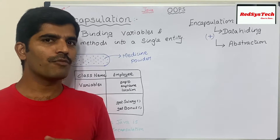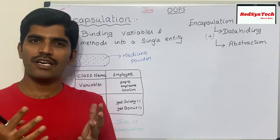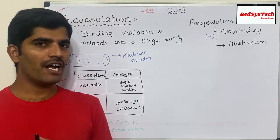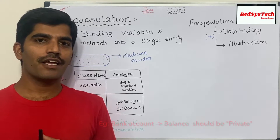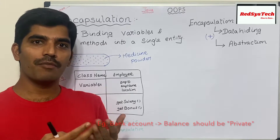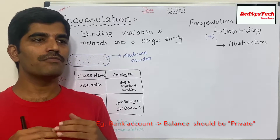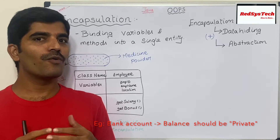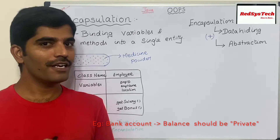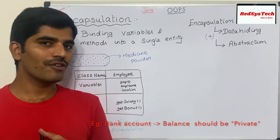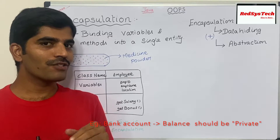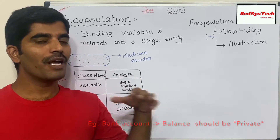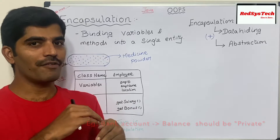Another example: let's say you are using a bank account. In the bank account you have your balance. You want to withdraw or deposit money, but at the same time you don't want other people to access your account. You are applying security for your account. Here we are hiding your data, which is called data hiding, by making your balance variable private.